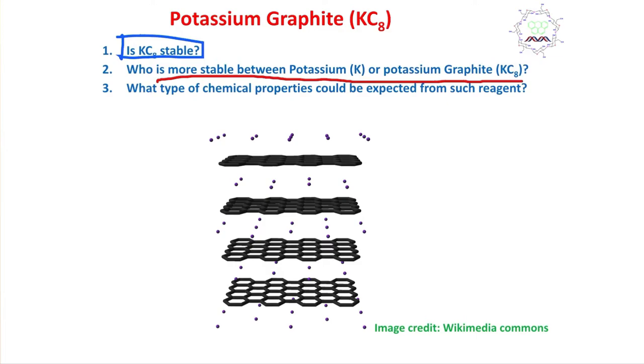The more accurate question is: who is more stable between potassium metal or potassium graphite? Obviously potassium graphite, because potassium metal and alkali metals are very very reactive. Potassium is in K plus and the electron is on a conjugated network.